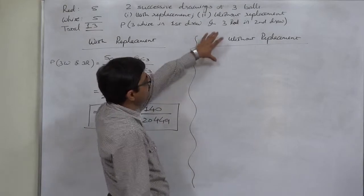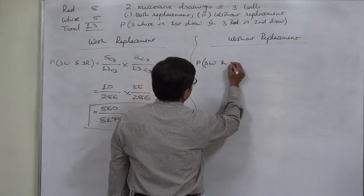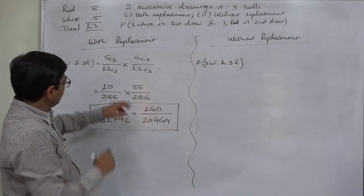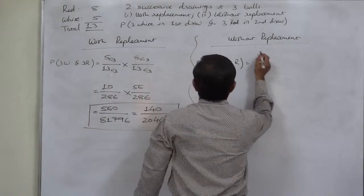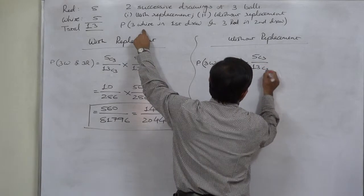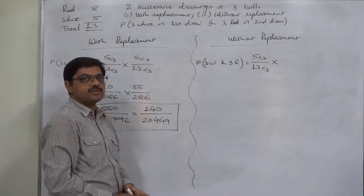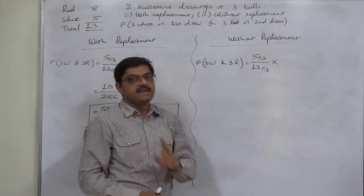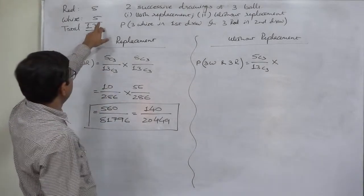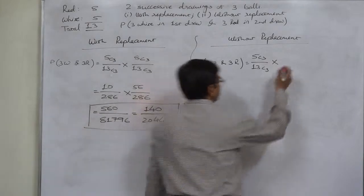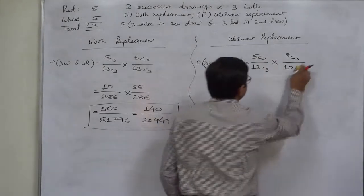Now the case of without replacement — the three balls drawn in the first draw are not replaced. Probability of three white balls in the first draw and three red in the second: in the first draw there are 13 balls, same combination 5C3 upon 13C3. But now these three balls are not replaced, so at the time of the second drawing there will be 13 minus 3, that is 10 balls. Since we drew three white balls, there is no change in the red balls, so it is 8C3 divided by 10C3.